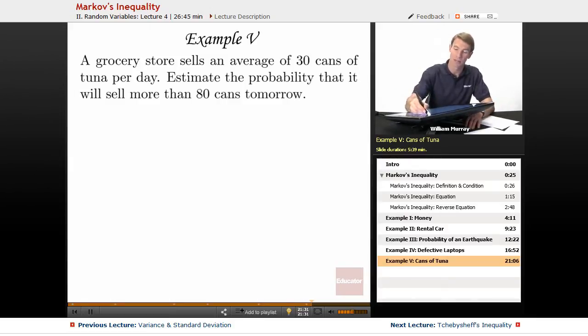This is kind of a classic Markov's inequality problem. Something that makes it Markov's inequality, and I didn't mention this on some of the previous examples, is that we're only calculating values that are going to be positive here. The number of cans of tuna that a grocery store is going to sell in any given day, that's going to be positive.